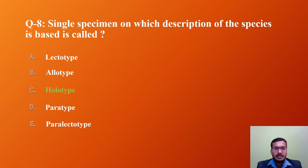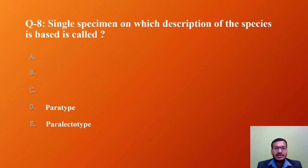Question 8: The single specimen on which the description of the species is based is called? A) Lectotype, B) Allotype, C) Holotype, D) Paratype, E) Paralectotype. Lectotype is designated from syntypes; allotype is the specimen of opposite sex to the holotype; holotype is the single specimen on which the description of the species is based; paratypes are additional specimens other than holotype and allotype; paralectotypes are syntypes other than lectotype. The correct answer is C — holotype.